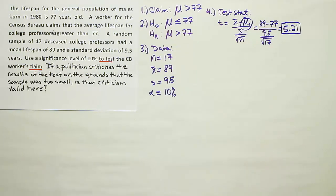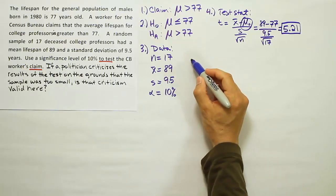Now that we have our test stat, and by the way that's a large test stat, it's most likely going to reject H0 because it's pretty extreme. But let's confirm that by calculating the critical value. The critical value is our fifth step in the process.